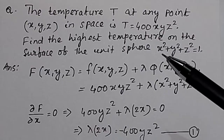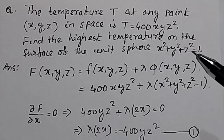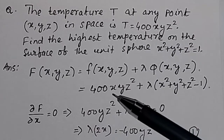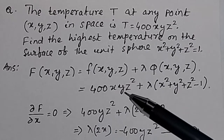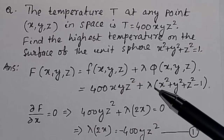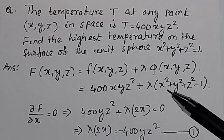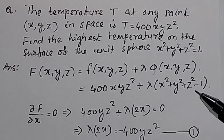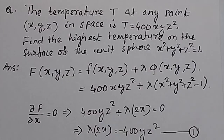The condition is given by the unit sphere, so the combined function is: 400xyz² + λ(x² + y² + z² − 1).